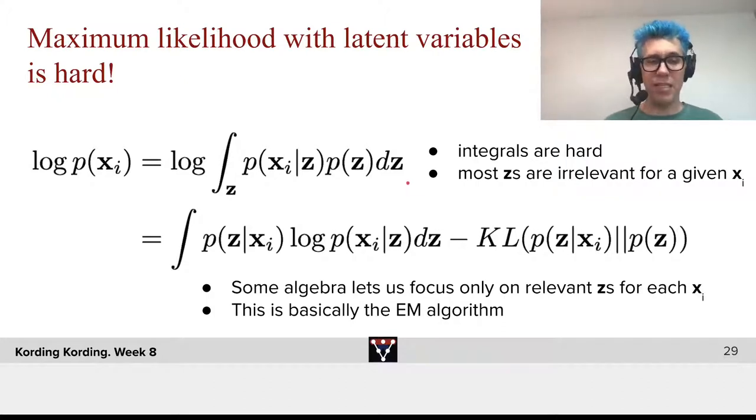We can say we instead have two terms. We have a term here, where p of z given xi times log p of xi given z dz. So this term here, we might hope that we only need to evaluate at a relatively small number of places, because here we have p of z given xi. These are basically the z's that are compatible with the xi that we have. And so this is one of the terms, and we might hope that we can approximate this integral well. Then we have a second term, which says that the probability distribution over z, the z given xi, should be similar to the probability distribution over z.